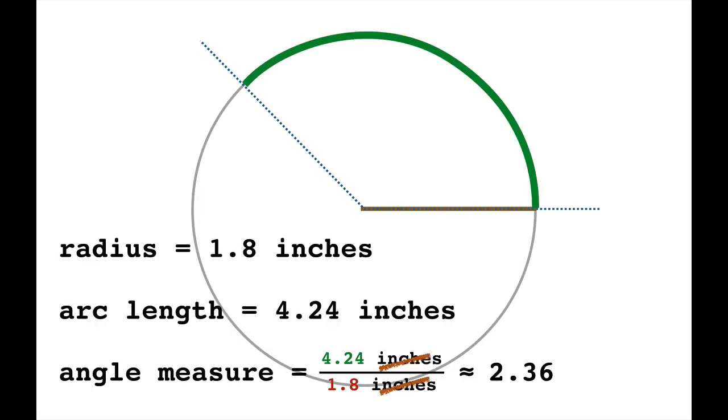That's 2.36, and we'll point out that actually this is a unitless number—the inches cancelled. It's a unitless quantity we call radians so that we know we're measuring angle, but in fact it's a unitless quantity. There are no units attached to it.